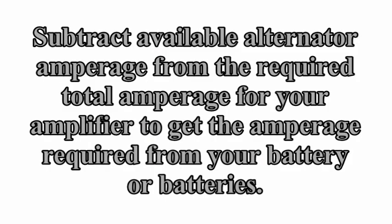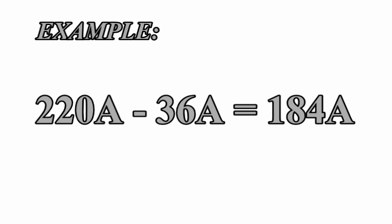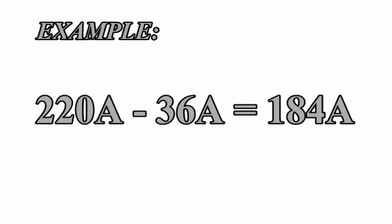Now you'll subtract the available alternator amperage from the required total amperage for your amplifier to get the amperage required from your battery or batteries. Your example is 220 amps minus 36 amps equals 184 amps. Now you know that you should be looking for a single battery or multiple batteries with a total value of around 184 amp hours.